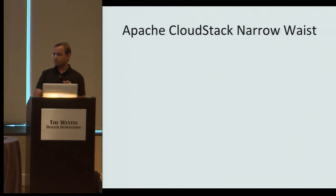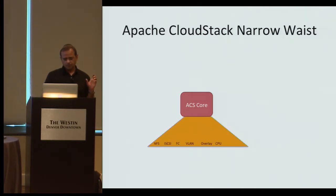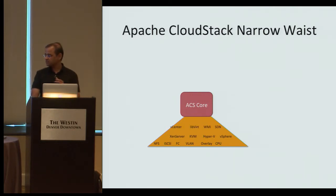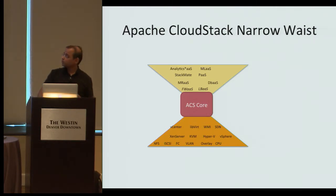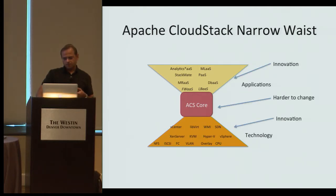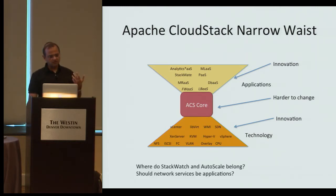If you apply the same model to Apache CloudStack, you have the ACS core, which Alex described in detail a couple of talks ago. At the lower end you have the technology — the hypervisors and SDN — and there are many talks about integrating technologies into ACS. At the top, you have services built on top of ACS, like load balancing, DB, or StackMate. ACS core is a little hard to change, similar to the IP layer. The question becomes: if I'm building monitoring as a service or auto scale as a service, where should I put my code — in ACS core, on top, or at the bottom?